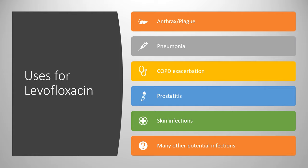Common uses include anthrax and plague — those are not very common, but levofloxacin is used for those. When there were anthrax scares, you may have heard of another medication in the same family called Cipro, which was in the news a lot, but levofloxacin can also be used for that.